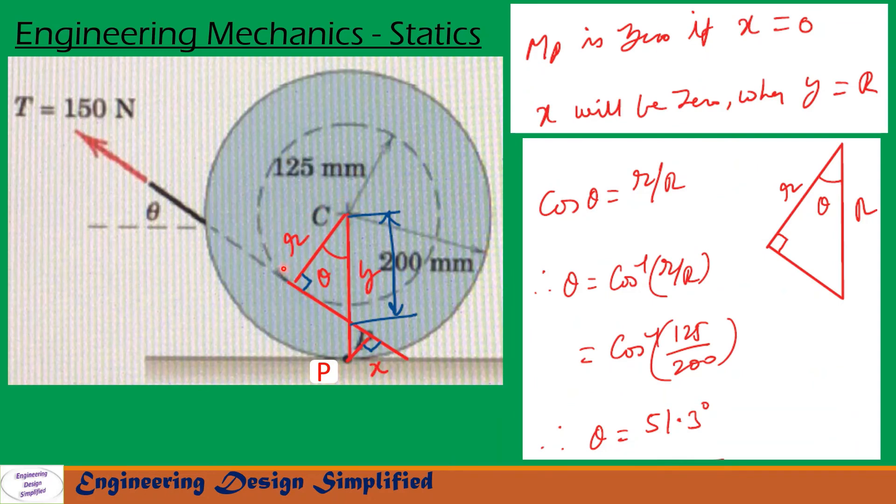Now let us see this right angle triangle here. This distance is r and this distance we called y. The angle between these two lines will be theta since this angle is theta. So for moment about P to be zero, y equal to R. Now let us transfer this triangle to here.